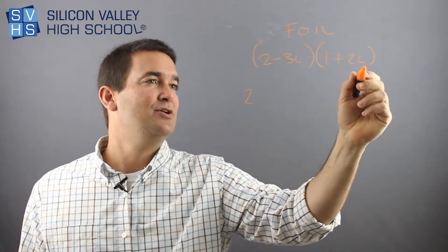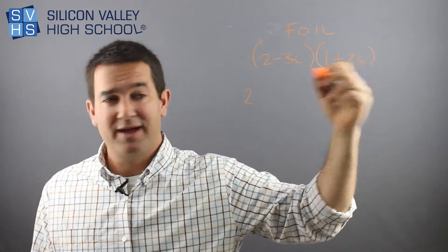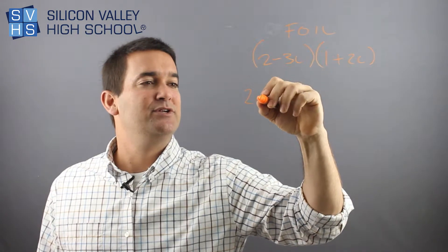Outside times outside, 2 times 2i, you just multiply them kind of like this was a variable like x. So 2 times 2i would just be 4i.